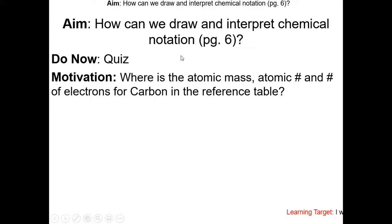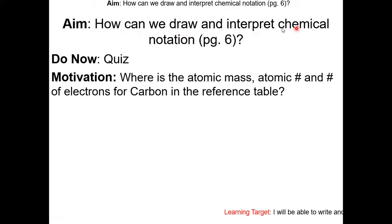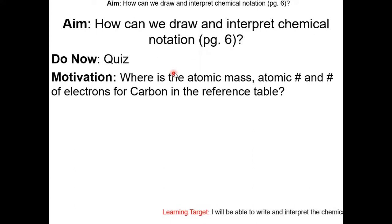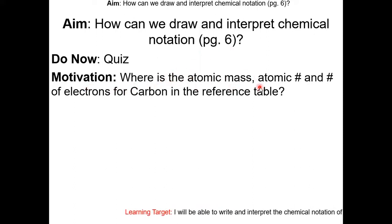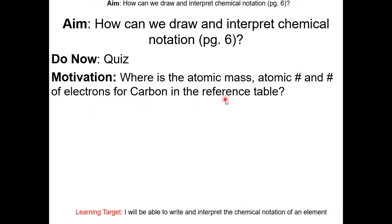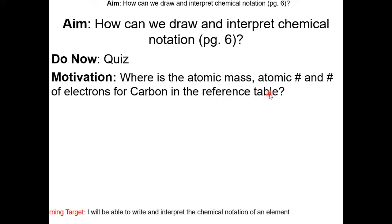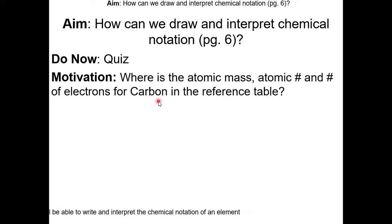This is my second video lesson for the unit atomic theory. Today we're going to talk about how we can draw and interpret chemical notation. Go to page 6 in the class packet. Where is the atomic mass, atomic number, and number of electrons for carbon in the reference table? Take a moment, go to the reference table, and look for this information. Once you find it, resume this video.